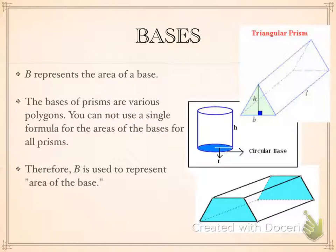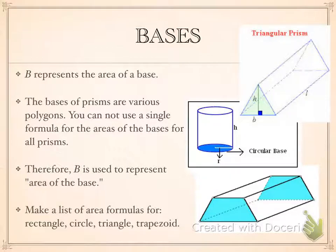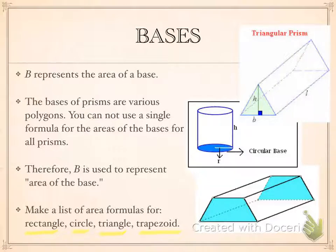Depending on which base you're working with, it might not just be a simple formula — you're going to have to think about which formula to use. But capital B is going to represent the area of the base. For review, I want you to list in your notes the area formulas for these four shapes: a rectangle, a circle, a triangle, and a trapezoid. Take the time now to write those down so you'll have them handy when working on these problems.